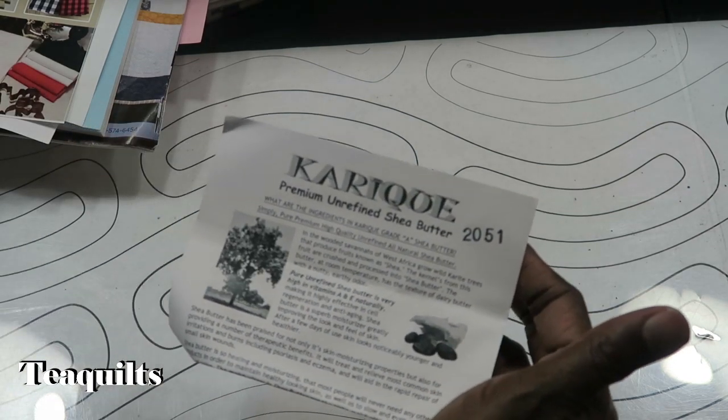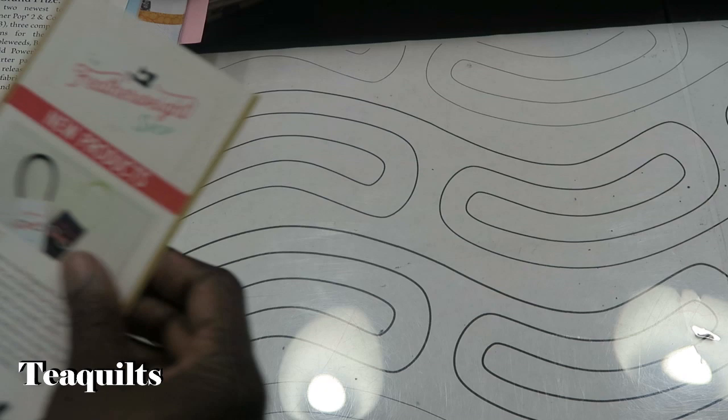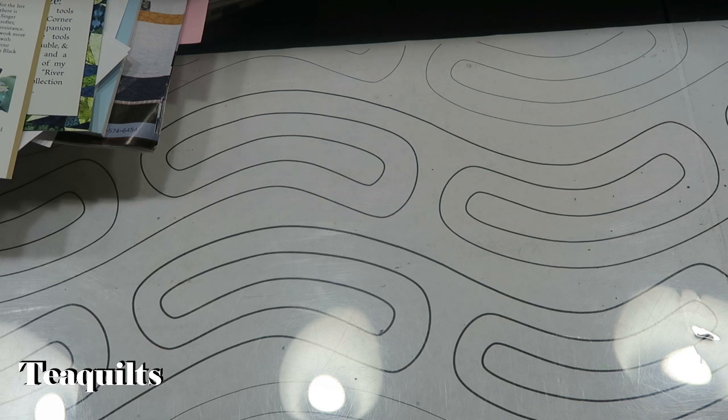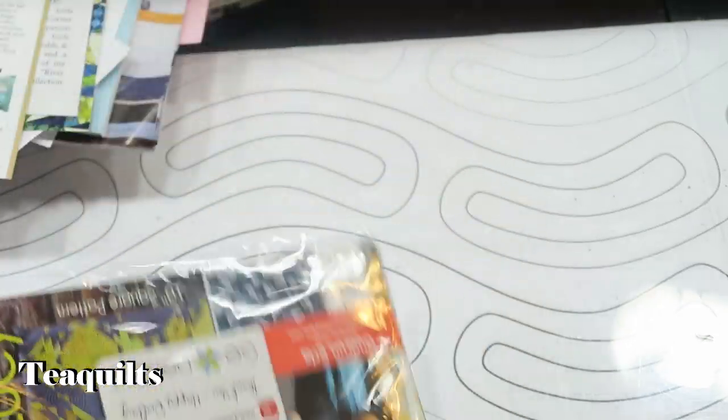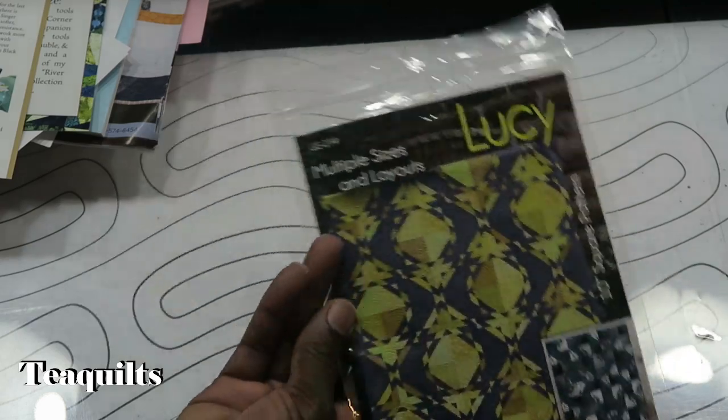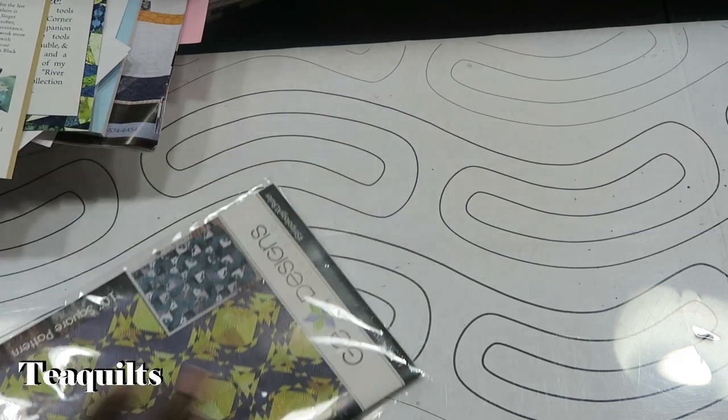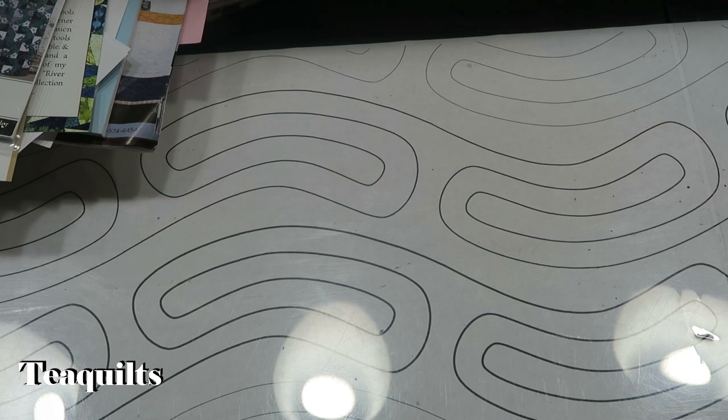Karakue Premium Refined Shea Butter was there. Studio 180 Design with Deb Tucker was there. The Featherweight Shop was there. I didn't purchase anything from those companies. However, GE Quilt Designs dot com was there, and I purchased this Lucy pattern. And they are very excellent pattern writers. This pattern was $10, and it was worth the $10. I paid a lot more for patterns and it was not worth the money.